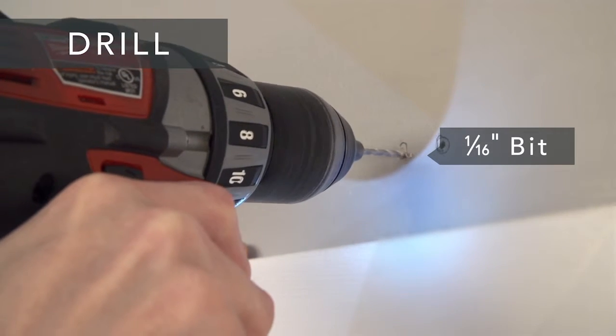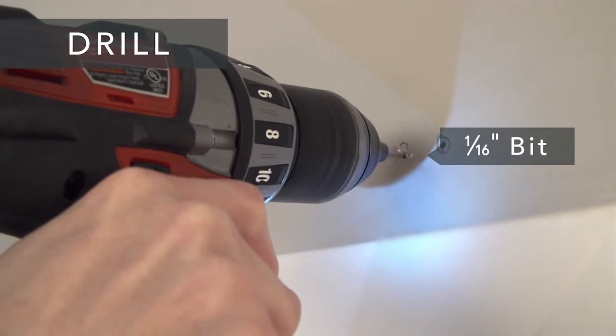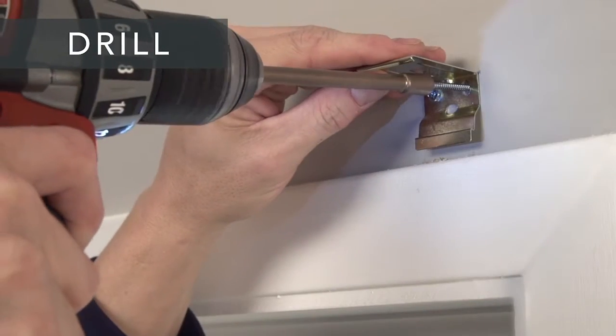Next, drill the holes for the screws with a 1/16th inch drill bit and screw the brackets securely into place.